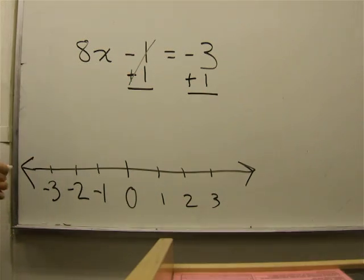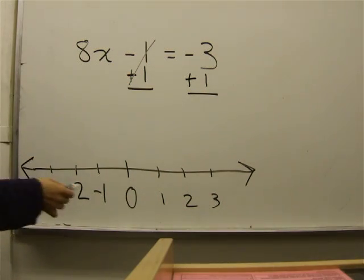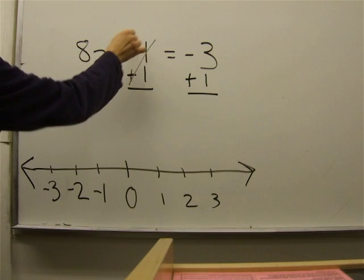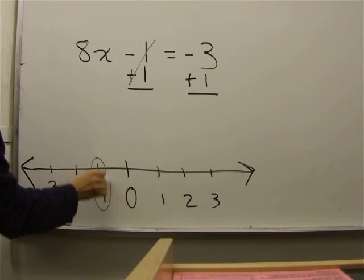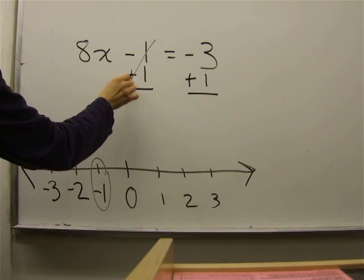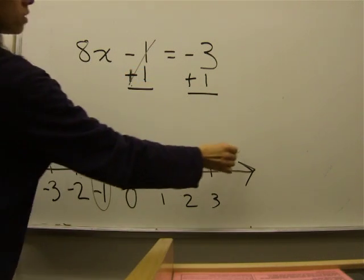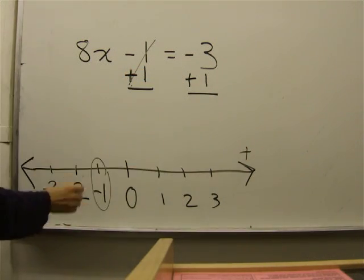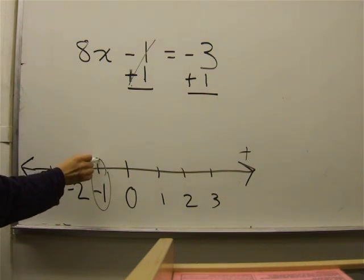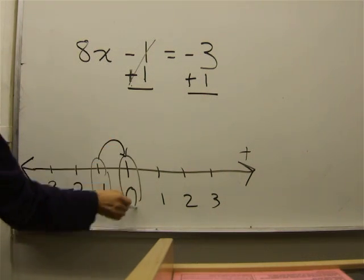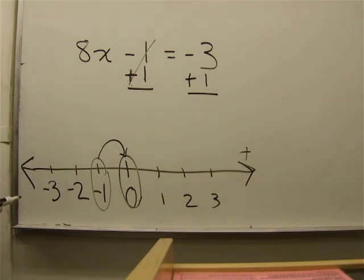This cancels out. And if you're not sure why, look at your number line and go to negative 1. This is telling you to go towards the positive once. You're at negative 1. Go towards your positive 1 time. You fall on 0. That is why it cancels out.